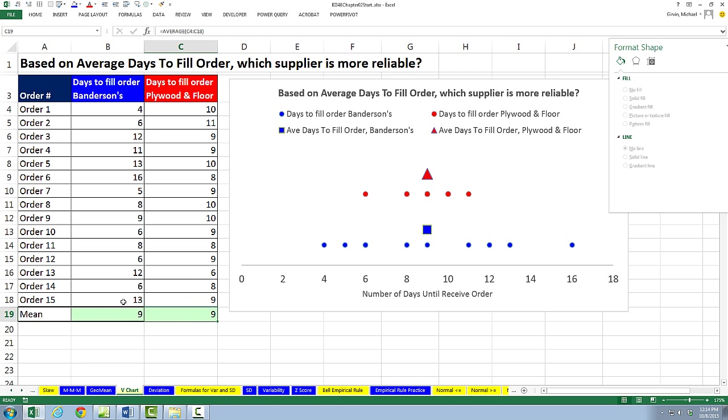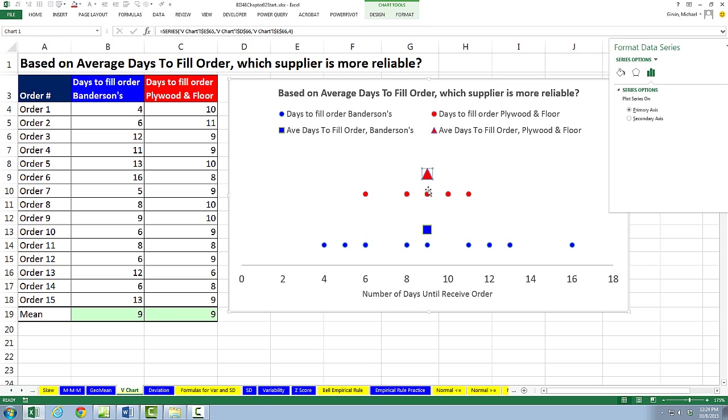But look at this. The average is 9 for Bandersons and for Plywood and Floor. How in the world do we decide which supplier we might like to choose going forward? Which one's more reliable? In order to answer that, we have to figure out which mean more fairly represents its data points. Here's a great visual over here. The red one, that's the mean for Plywood and Floor. And this is the mean for Bandersons. On this axis, this is number of days. Here's the mean, here's all the data points. Here's the mean, here's all the data points.